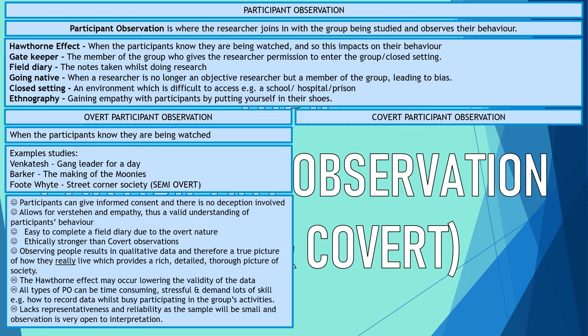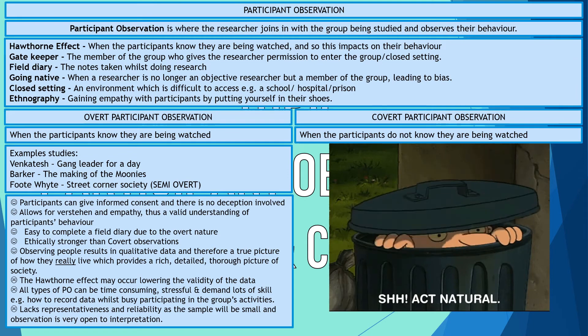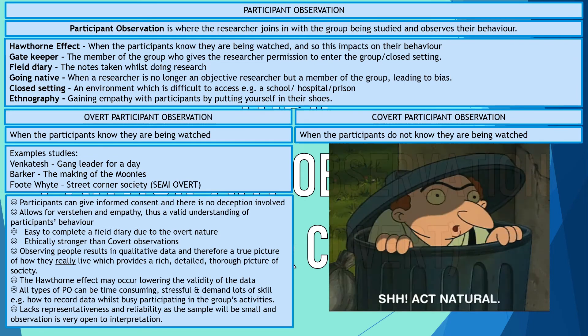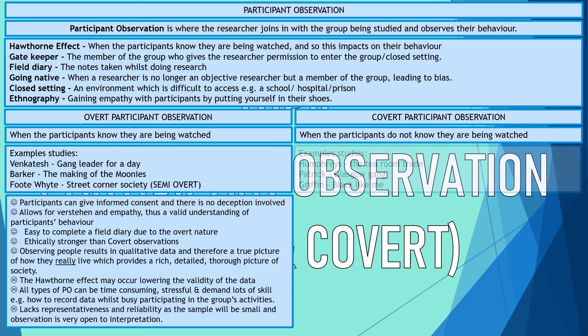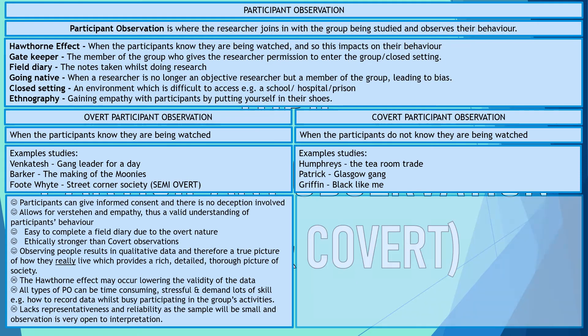Covert participant observation is where the participants don't know they're being studied — the researcher's role is hidden from the sample. Key examples include Humphries and 'The Tearoom Trade,' Patrick and his Glasgow gang study, and Griffin with the 'Black Like Me' study.